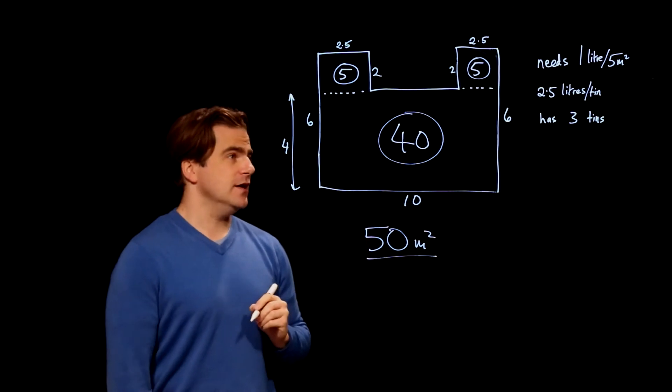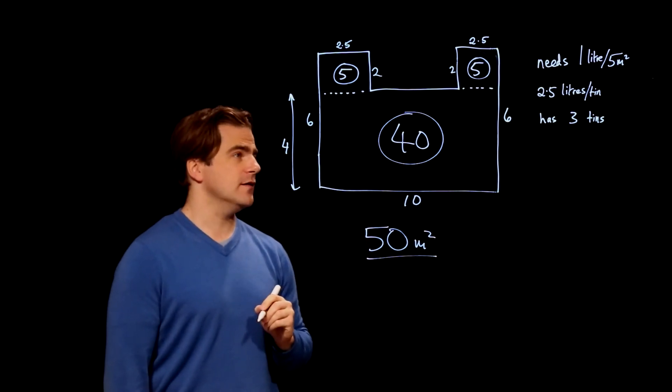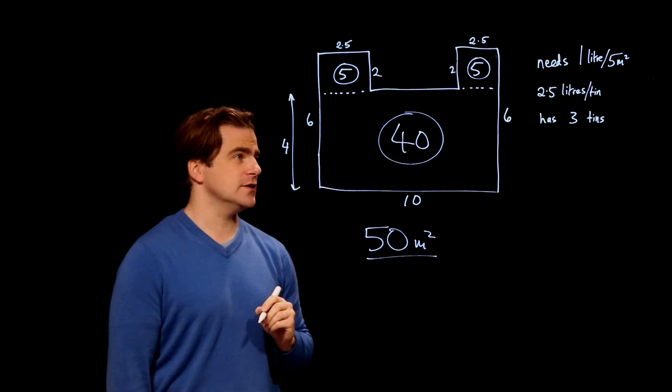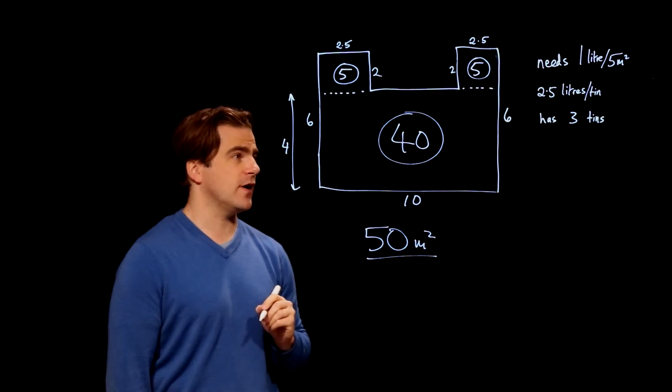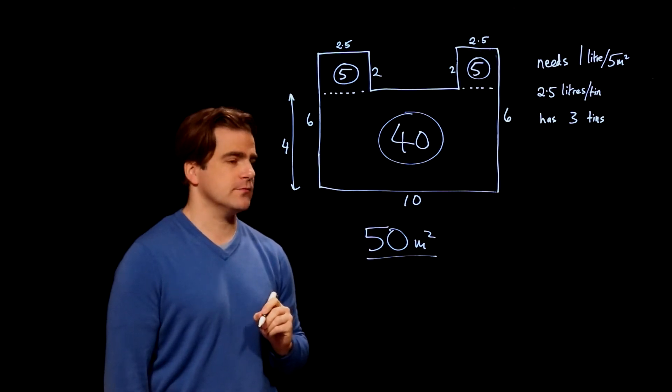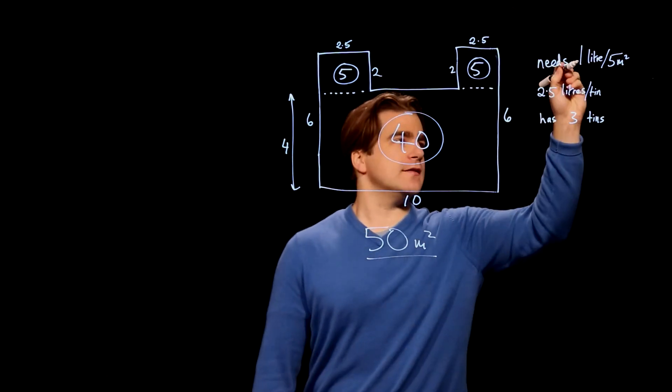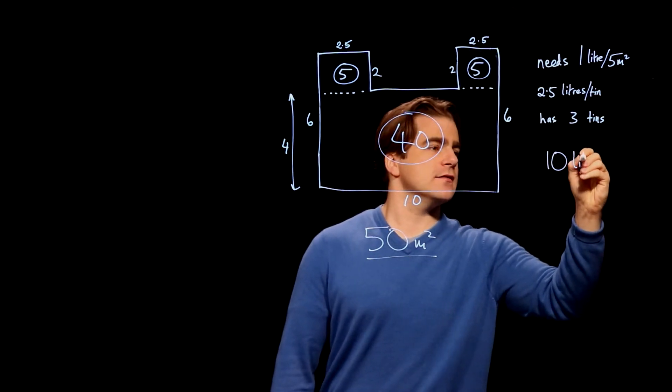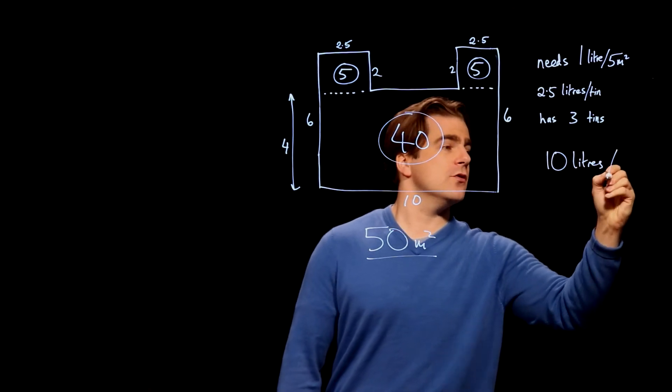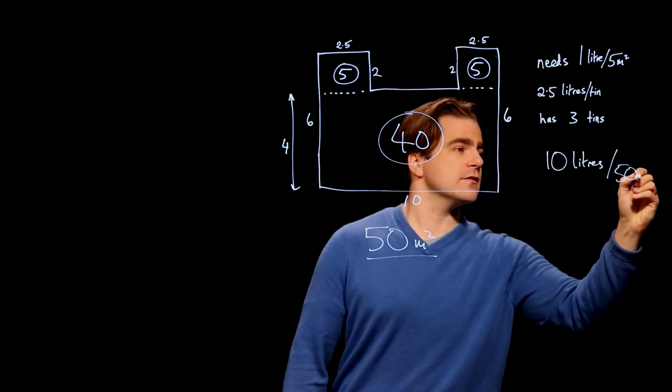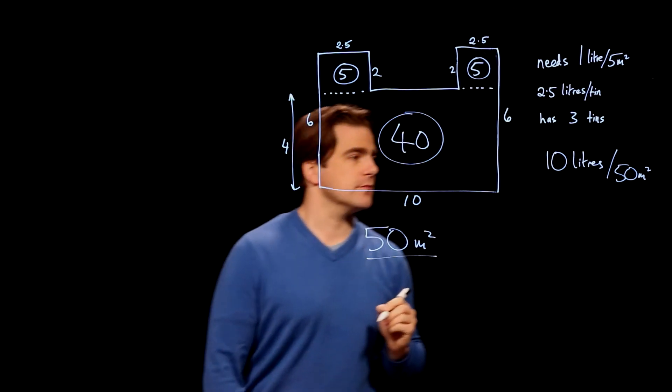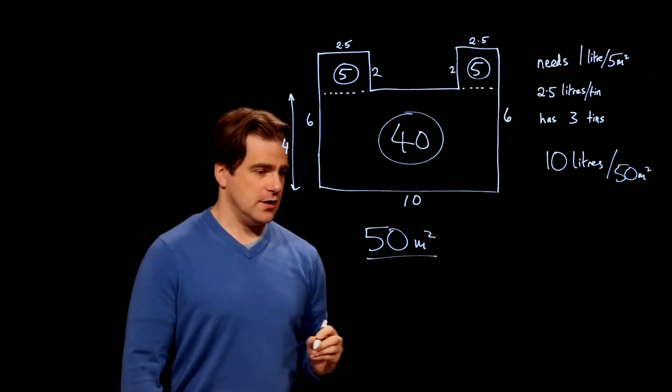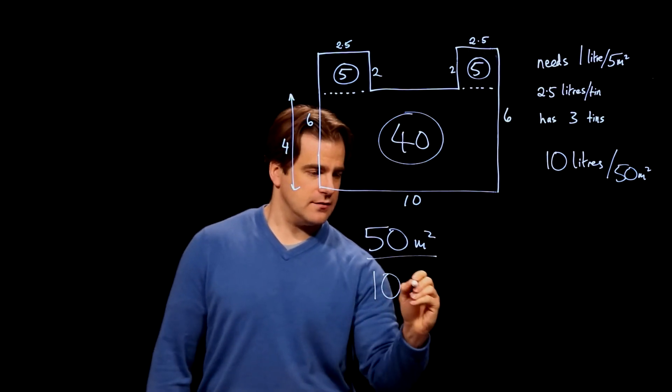And Angie needs 1 litre of varnish for every 5 metres squared. So if she needs 1 litre for 5 metres squared, she must need 10 litres for 50 metres squared. And that's what we've got. So she needs 10 litres.